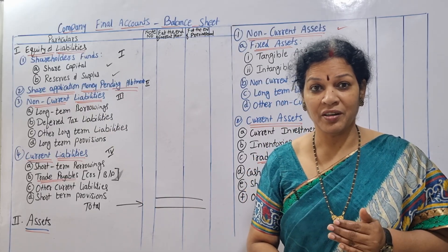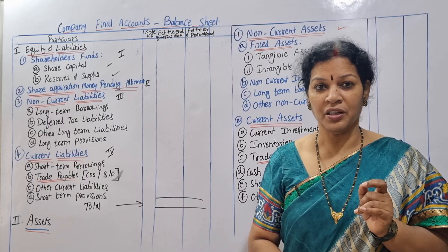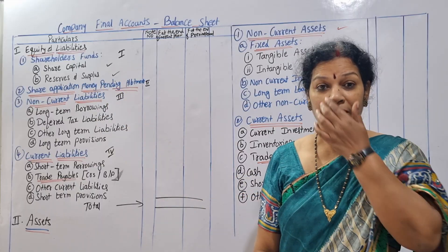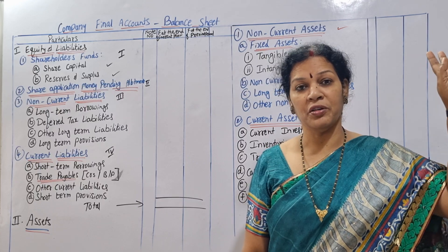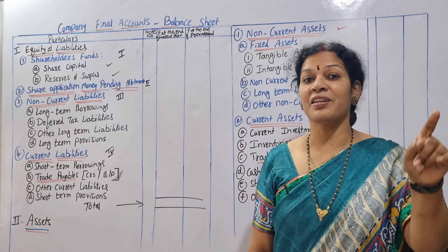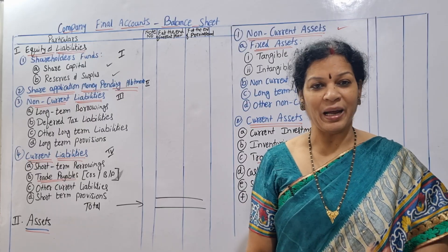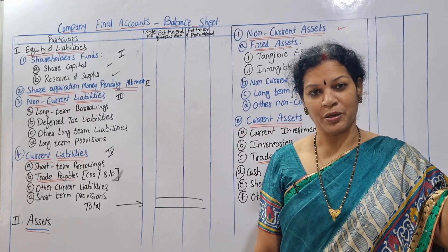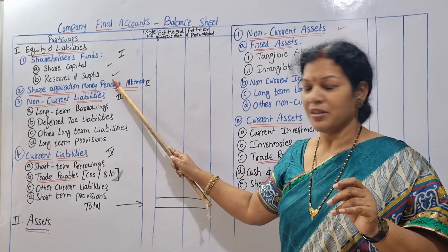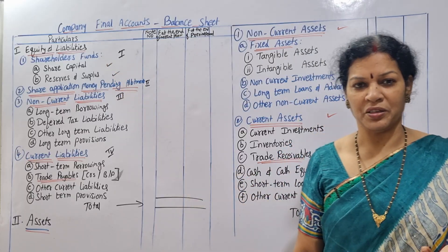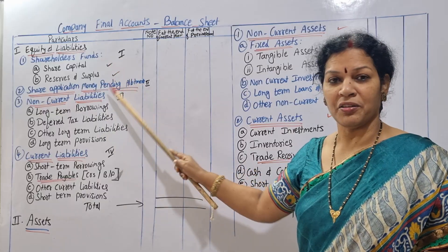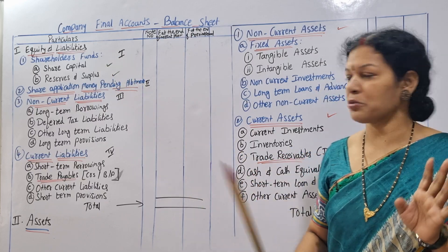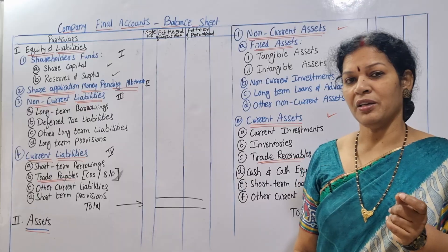If you have a profit and loss statement, you will have a profit. That's why you can adjust the results and surplus. In the old traditional method of profit and loss account, you can adjust the capital. Now you can adjust the results and surplus. Shareholders funds are divided into two parts: one is share capital, and two is reserves and surplus.